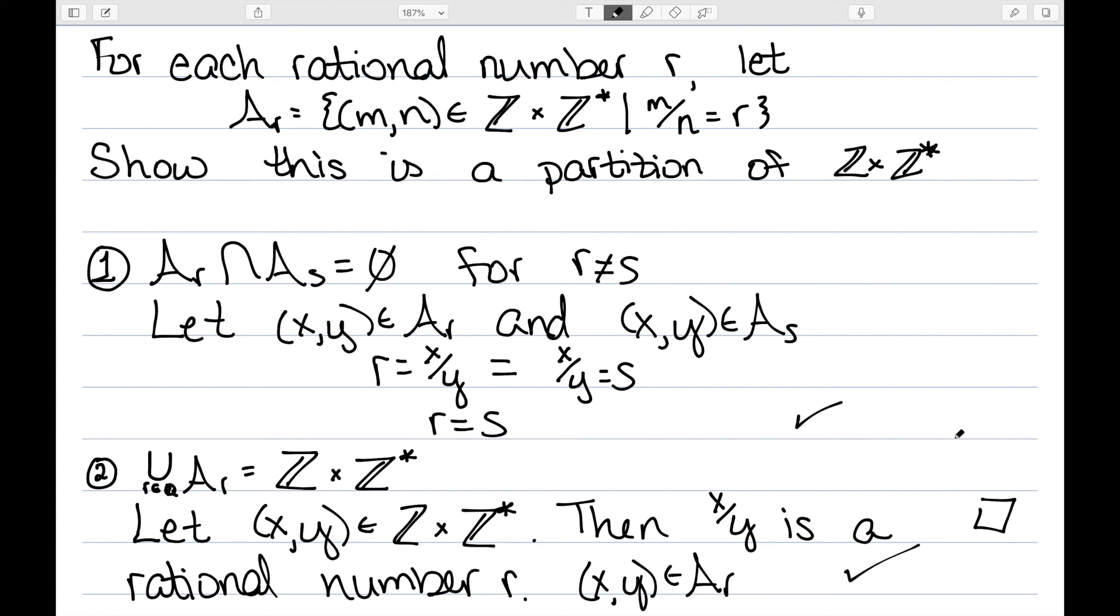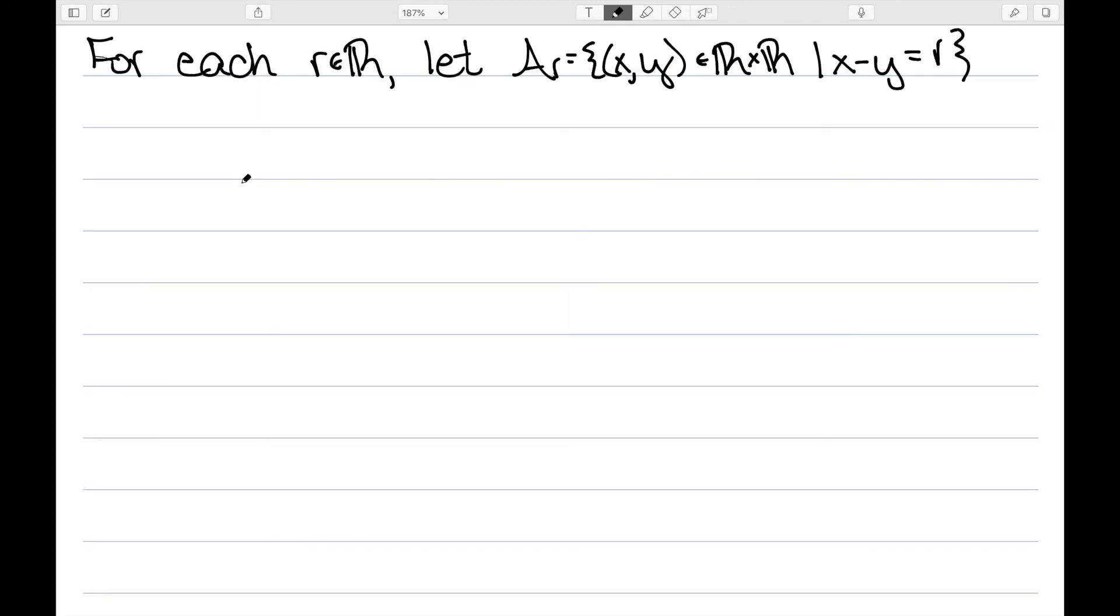So I have shown that this is a partition of Z × Z*. For each r in the set of real numbers, let's let Aᵣ be equal to the ordered pairs (x, y) in R × R, such that x - y is equal to r.